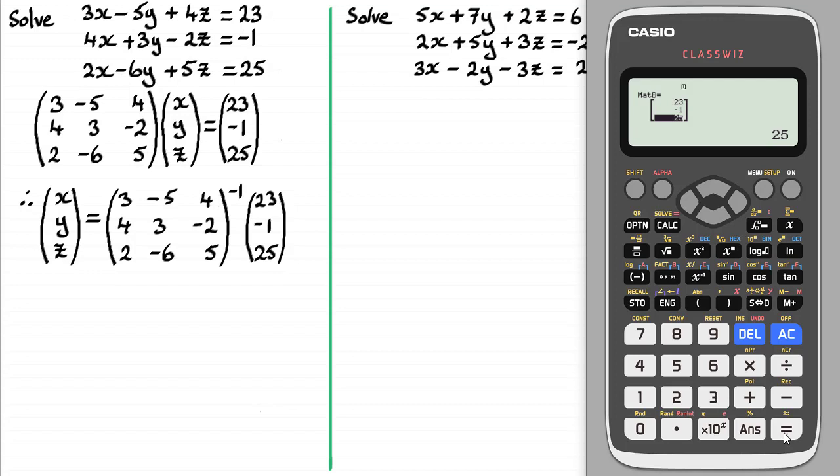Now all I'm going to need to do then is multiply the inverse of matrix A with our column matrix B. So I'm going to come out of this by pressing options, and now we're going to do some matrix calculations. So I'm going to press 3, and what I need to do is tell it that we're going to do the inverse of matrix A times the matrix B. So I need to go back to options here and I'm going to select matrix A. So that's 3.